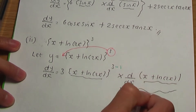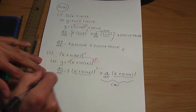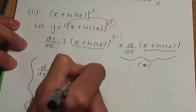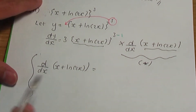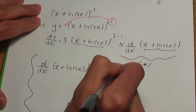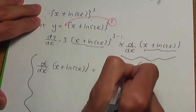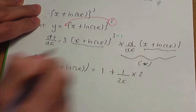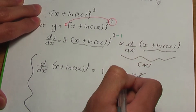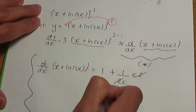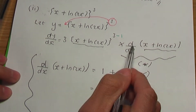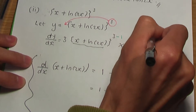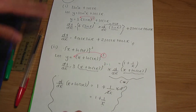Let's do this as a side calculation. Let's work out d/dx of x plus ln 2x. When I differentiate x, it's 1. Plus, when you differentiate ln, it's 1 over — so it's 1 over 2x — but you need to multiply by the derivative of 2x being 2. I can cancel these two 2s to give an answer of 1 plus 1 over x. So that should be the derivative of this term.